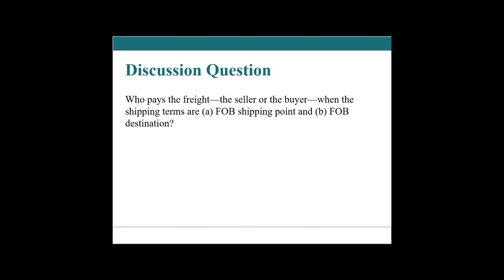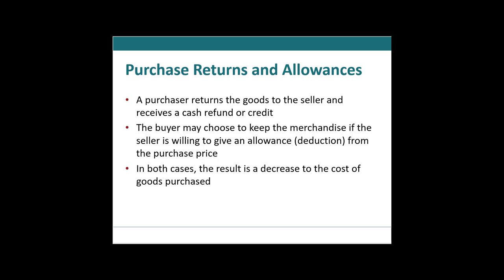Next: purchase returns and allowances. A purchaser returns goods to the seller and receives a cash refund or credit, or the buyer may choose to keep the merchandise if the seller is willing to give an allowance from the purchase price. In both cases, the result is a decrease to the cost of goods purchased — which flows through as a reduced amount to cost of goods sold.